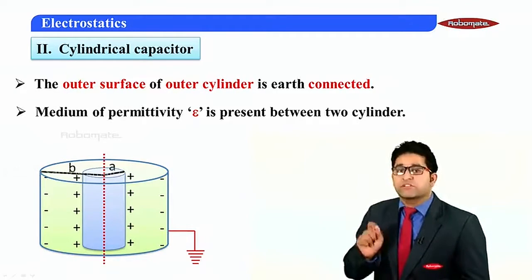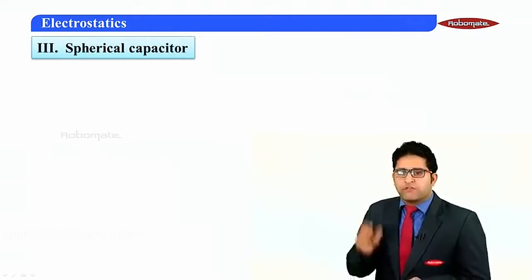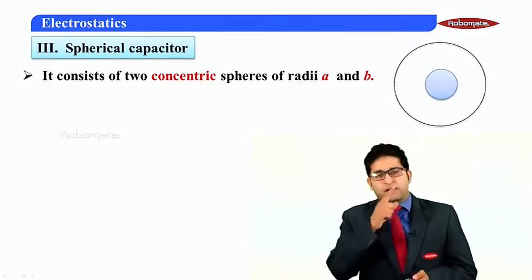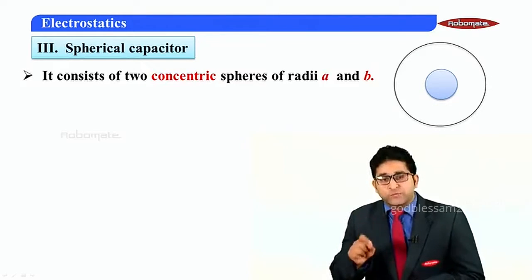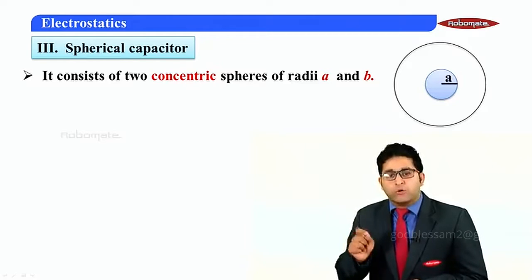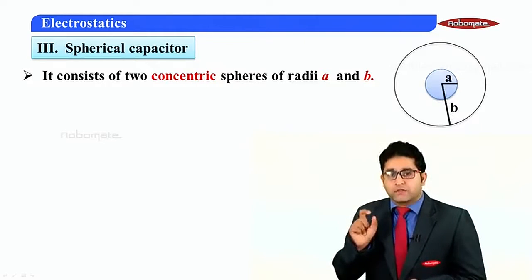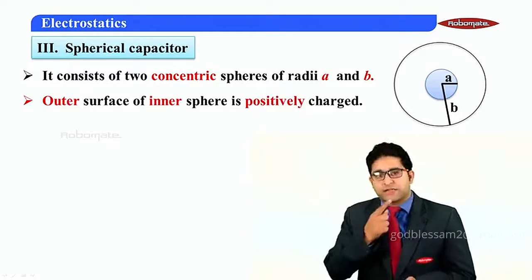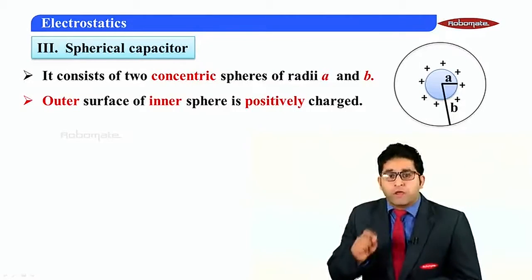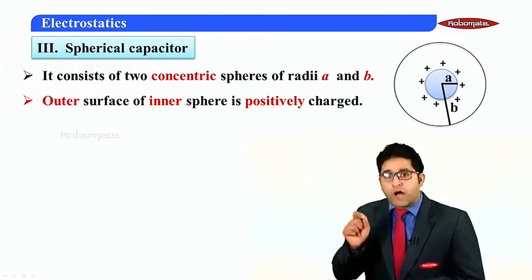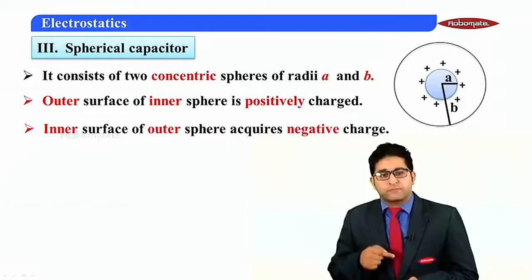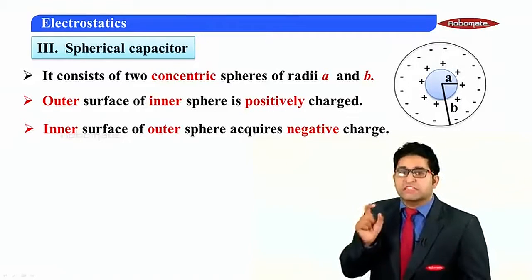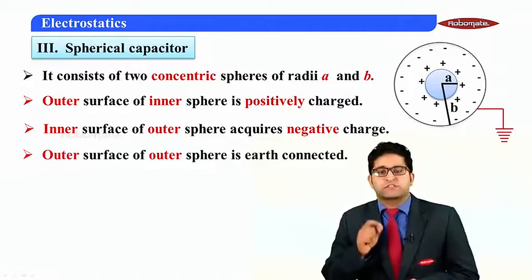Now let us move towards the third type of capacitor, which is the spherical capacitor. It consists of two concentric spheres — the inner sphere having radius small a and the outer sphere having radius small b. The outer surface of the inner sphere is positively charged, and because of this, the inner surface of the outer sphere acquires negative charge. The outer surface of the outer sphere is connected to earth.